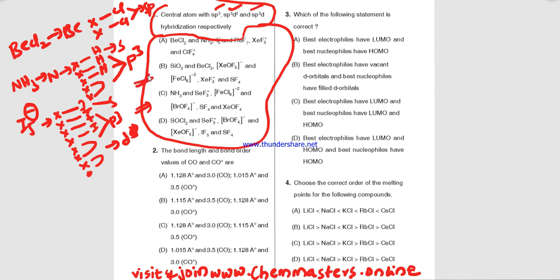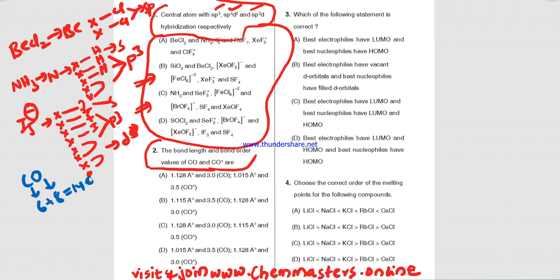Since no option matches the correct hybridization order, there is no correct option for this problem — any mark awarded here would be for an incorrect option. Now look at the second question: the bond length and bond order values of CO and CO+. For CO, carbon contributes 6 electrons and oxygen contributes 8 electrons, giving 14 total electrons. CO is a 14-electron species.